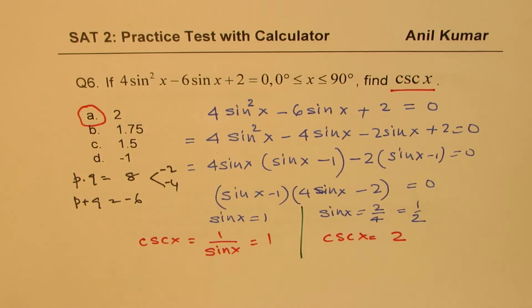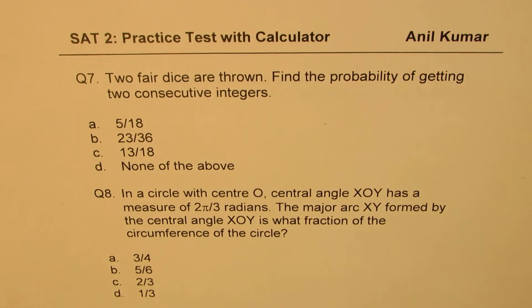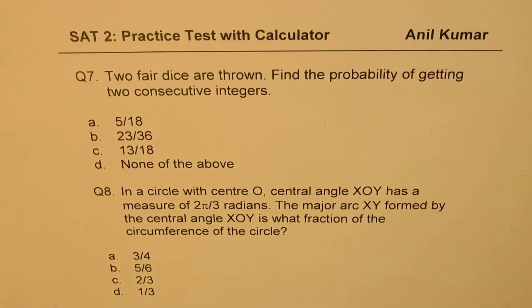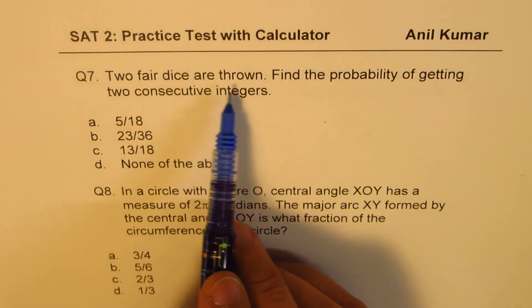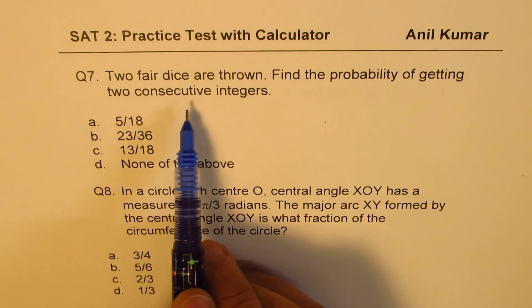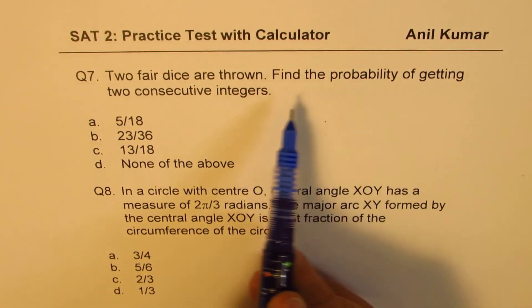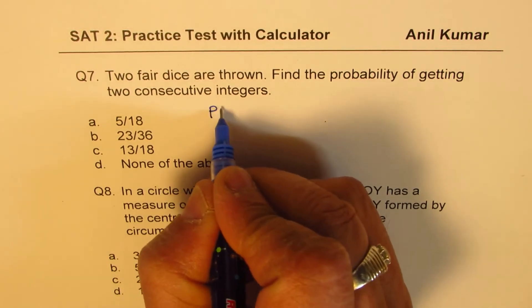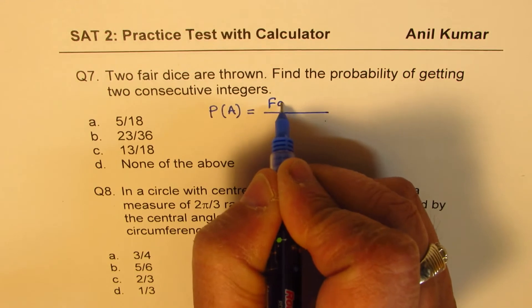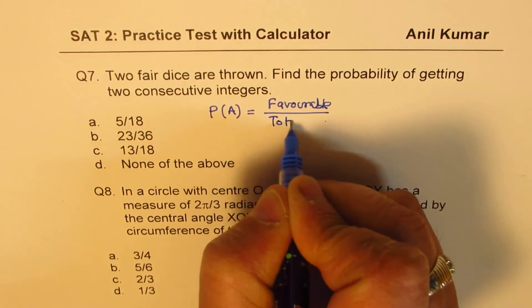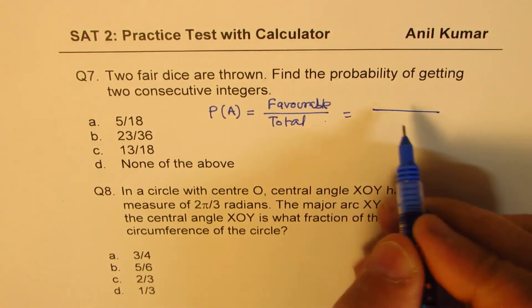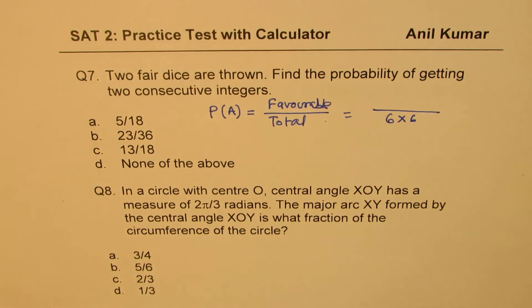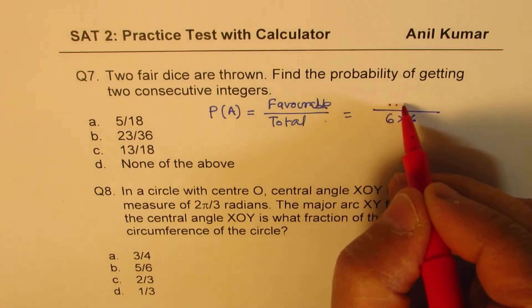Question 7 is a difficult probability question: two fair dice are thrown — find the probability of getting two consecutive integers like 1-2, 2-3, 3-4, etc. The total number of outcomes is 6 times 6 equals 36. We need to figure out the number of favorable outcomes, which is the tricky part.